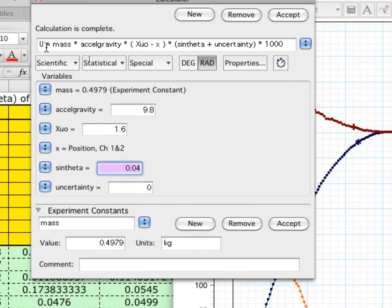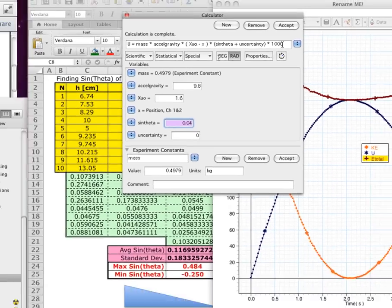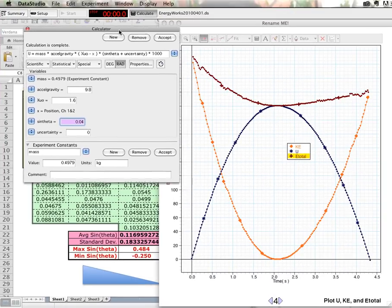We're using potential energy equals mass times acceleration of gravity times sine of theta plus the uncertainty, because we're not so sure about the value for sine theta, and multiplied by a thousand to bring the value into millijoule range.